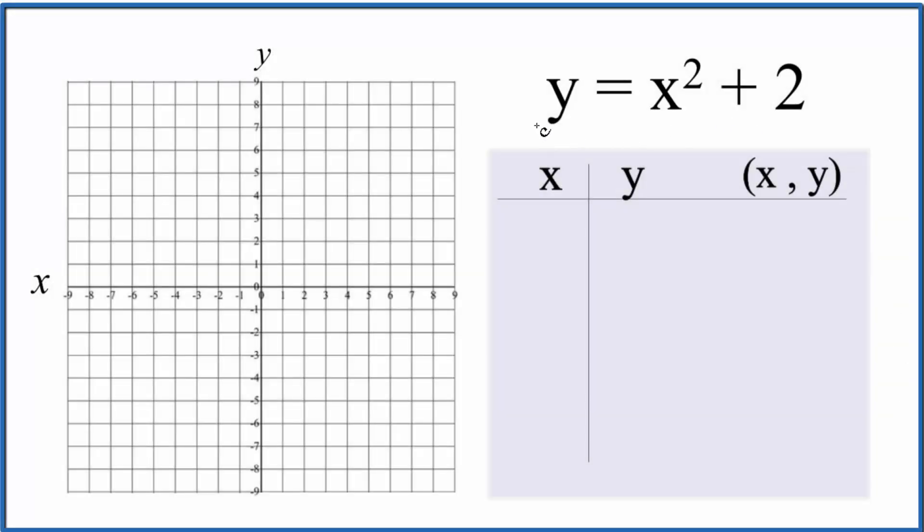Let's graph the equation y equals x squared plus 2. We'll do this with a table of values. We're going to put values in for x here and then find out what the resulting value for y would be. Then we'll graph those points on the graph here, and that will give us the graph of y equals x squared plus 2.